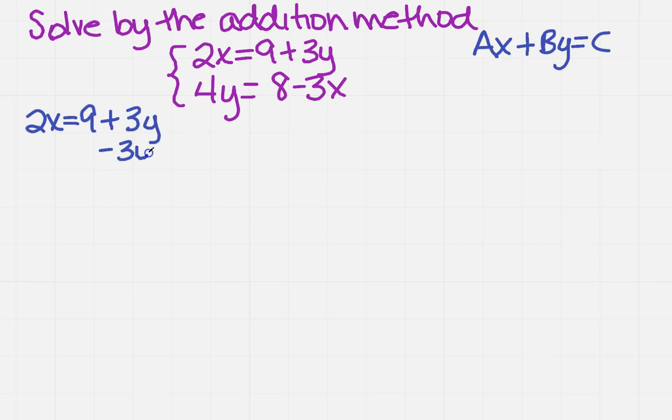So I'm going to subtract 3y from each side, which then will give me 2x minus 3y equals 9.